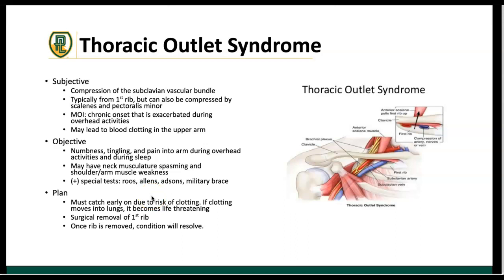One challenge with thoracic outlet syndrome is that people shake it off — 'my hand's numb, no big deal.' They may go months before it's assessed. Anytime a patient complains of numbness and tingling, perform an upper quarter screen — a full neurological clinical assessment — to rule out thoracic outlet syndrome. Treatment depends on the cause: if it's the first rib, they surgically remove it to create space. If it's muscular, instrument-assisted soft tissue massage can reduce spasming compressing the neurovascular structures.